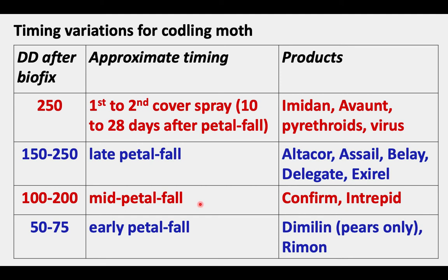And finally, 100 to 200 degree days — equivalent to about mid petal fall — is for Confirm and Intrepid. And the earliest timing is 50 to 75 degree days after biofix, which is early petal fall, if you're using Dimilin or Rhyno.